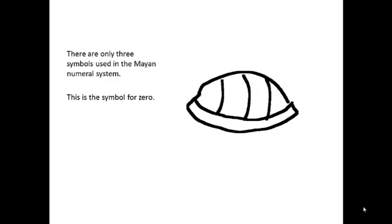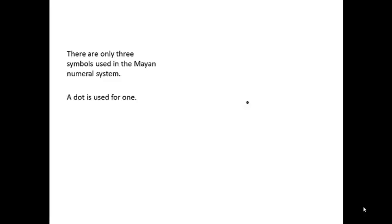The first symbol, the thing that looks sort of like a turtle shell, is a symbol for zero which is used like our zero. A dot is used for one and a bar is used for five. So to write seven it would be two dots and a bar.